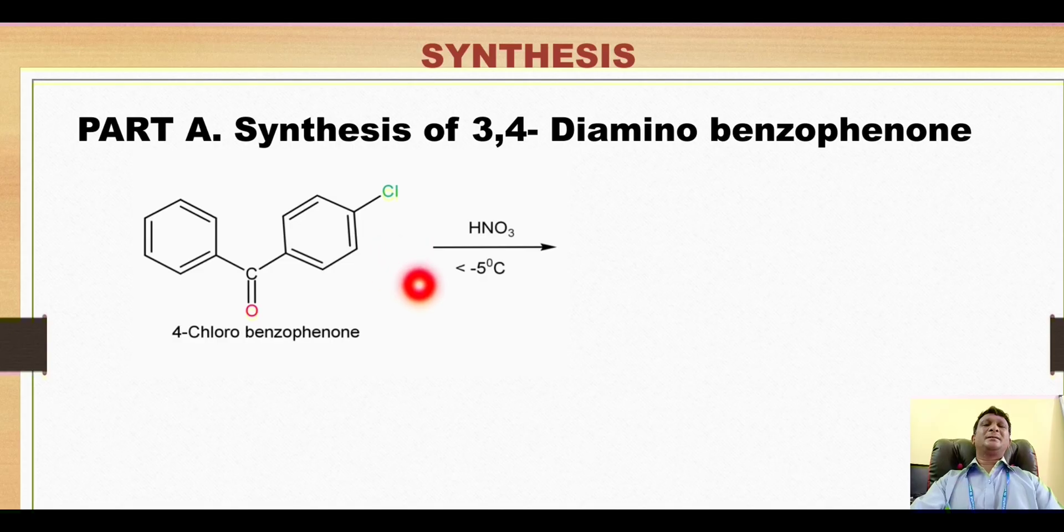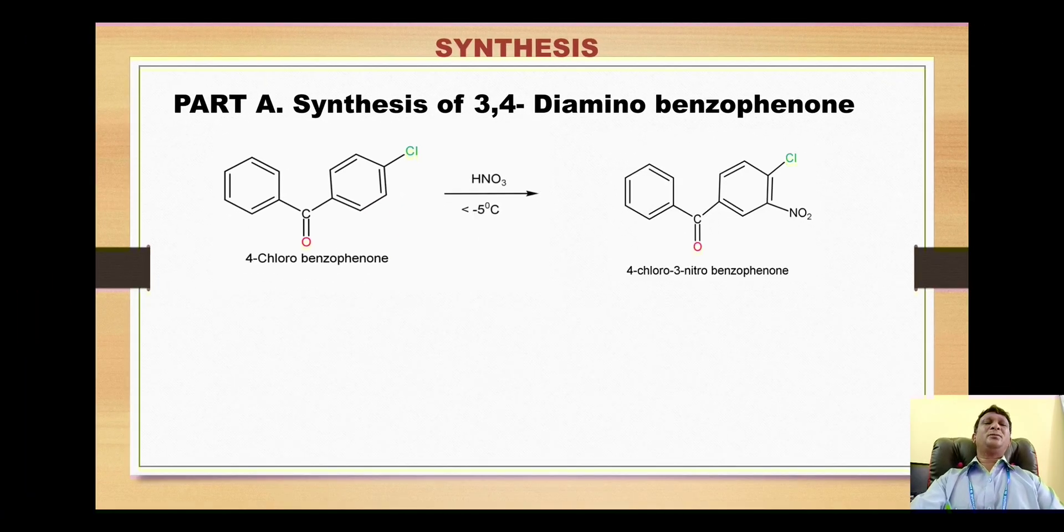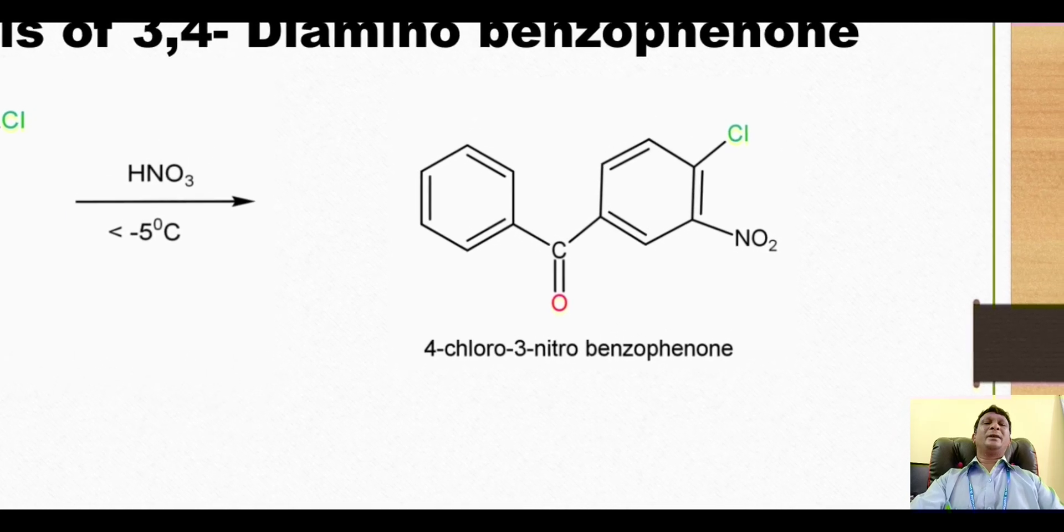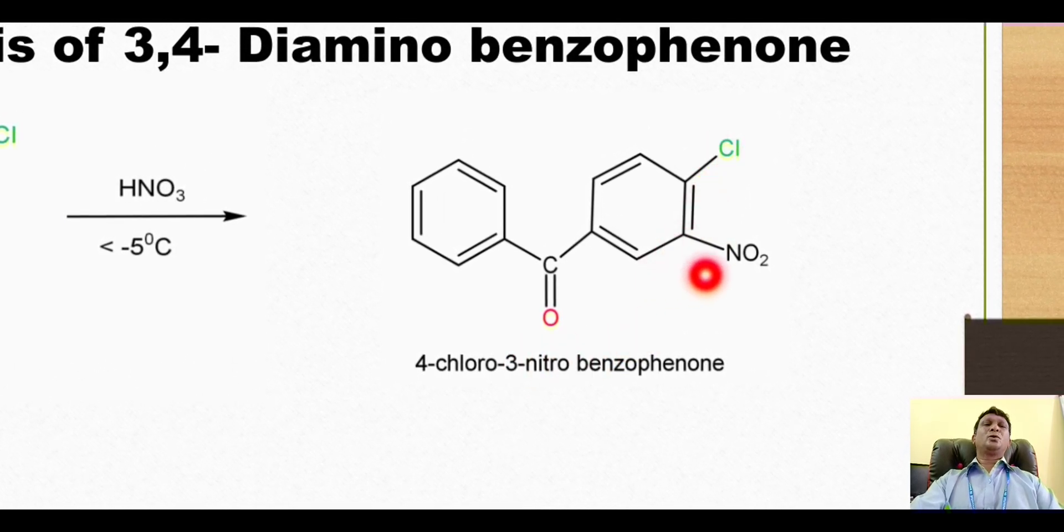The nitronium ion then gets attached on this position. Now why is this so? Because this benzoyl group is deactivating and meta-director, so for this group this is the meta position, while the halogens are deactivating but are ortho-para director. So for chlorine this is the ortho position. Due to presence of these groups, ultimately electrophilic substitution reaction takes place at this position. That's why the nitro group will get entered at this position and this gives us formation of this nitro derivative which is called as 4-chloro-3-nitro-benzophenone.